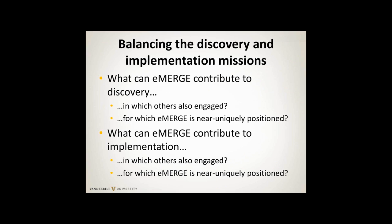As I thought about the discovery and implementation missions, I think we ought to consider both and find some balance - they interact with each other. What can eMERGE contribute uniquely to discovery, and what can eMERGE contribute uniquely to implementation? There are lots of people doing GWASs in lipid traits or acute myocardial infarction traits, and we can participate. But what eMERGE ought to focus on is what we can do that other people would have a harder time doing.